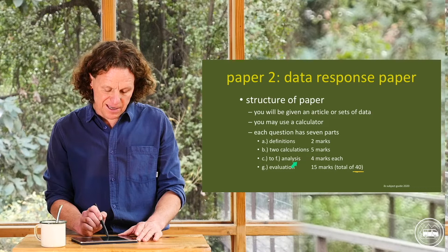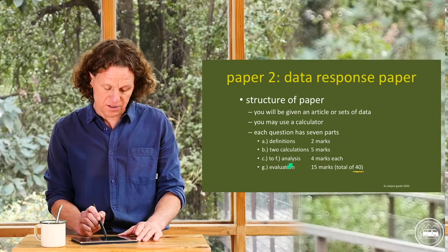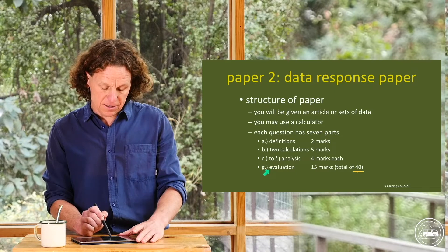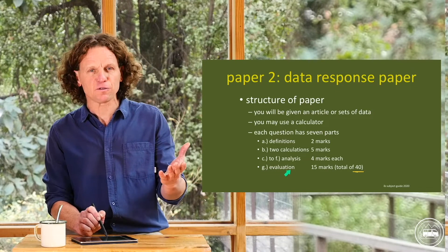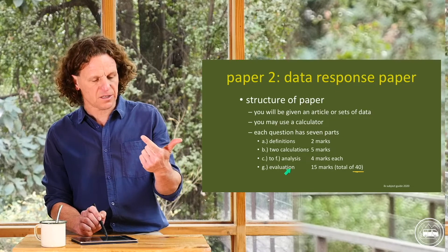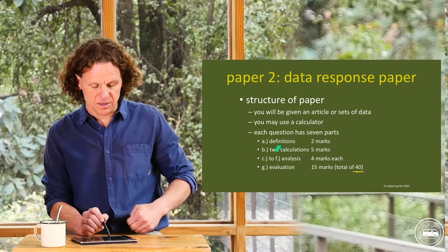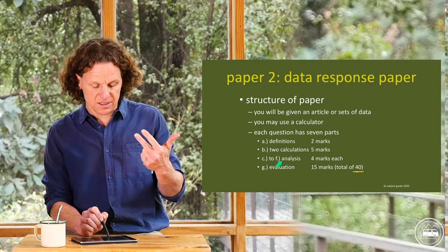Then parts C, D, E, and F are the analysis sections. And then part G is the evaluation. So think about those five elements: language, calculations, diagrams, analysis, evaluations. Definitions equal language. Calculations. Diagrams are part of analysis. And then evaluation.